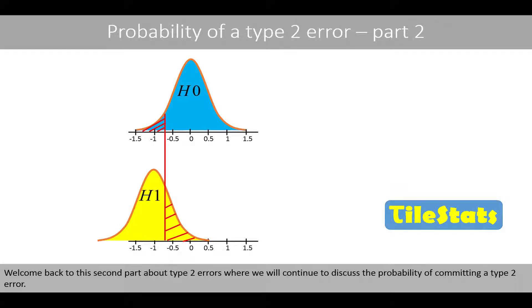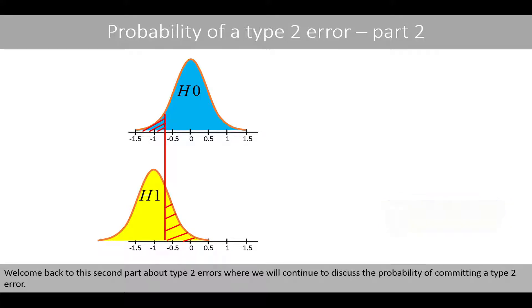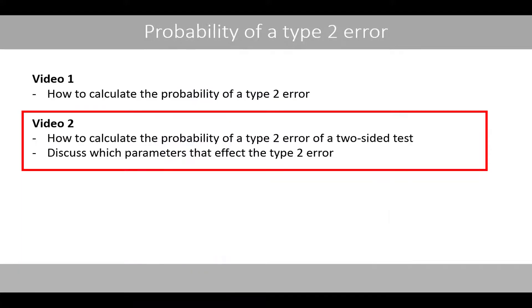Welcome back to the second part about type 2 errors, where we'll continue to discuss the probability of committing a type 2 error. In this second video, we'll see how we can calculate the probability of a type 2 error of a two-sided test.